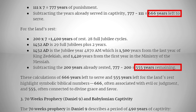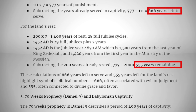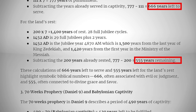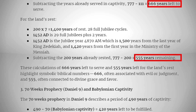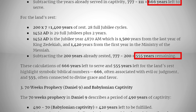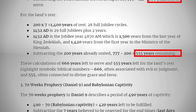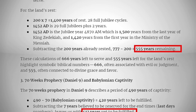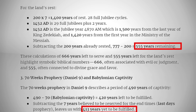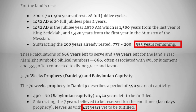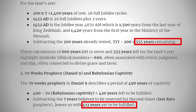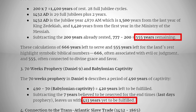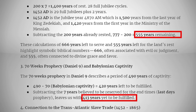111 years times seven equals 777 years of punishment. We subtract the years already served in captivity: 777 minus 111 gives us 666 years left to serve. We then subtract 200 years already rested from 777, giving us 555 years remaining. These calculations of 666 years left to serve and 555 years left for the land to rest highlight symbolic biblical numbers — 666, often associated with evil or judgment, and 555, often connected to divine grace and favor.